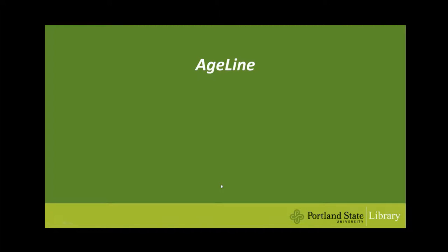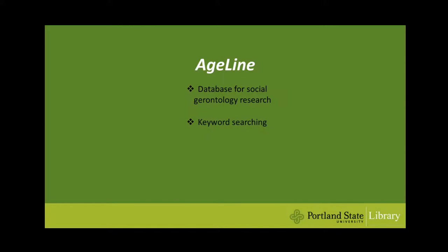To review: Ageline is a database you can use to look for research in the field of social gerontology. The database supports keyword searching, but it does not allow you to limit to peer-reviewed sources only. Instead, you can limit your results to academic journals only, and you can also choose to limit to specific target audiences.